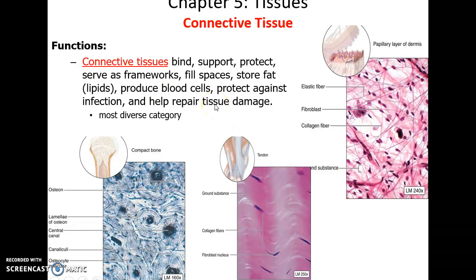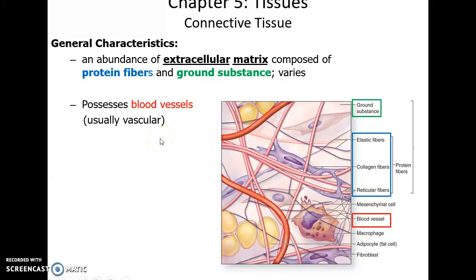Moving on to connective tissue. Connective tissue has lots of functions — very diverse. It can bind structures together, provide support, provide protection, provide a framework, store fats and energy, fill spaces, produce blood cells, protect against infection, and repair tissues. Often, but not always, connective tissues have a lot of extracellular matrix made up of protein fibers and ground substance. Many connective tissues also possess blood vessels, making them vascular.